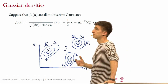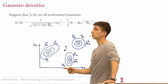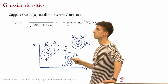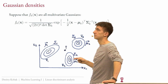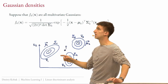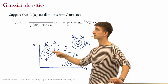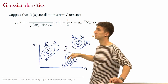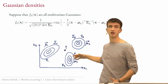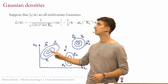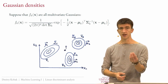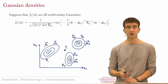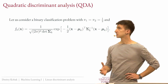The prior matters here. Imagine this class has a very low prior — say one percent — meaning it's very rare. Even if the probability density is a bit larger for that class, it's much more likely the point came from a class with a higher prior, say 49 or 50 percent. That's why you need both the prior and the likelihood — multiplying them together gives you the posterior. That's how Bayes' theorem works.